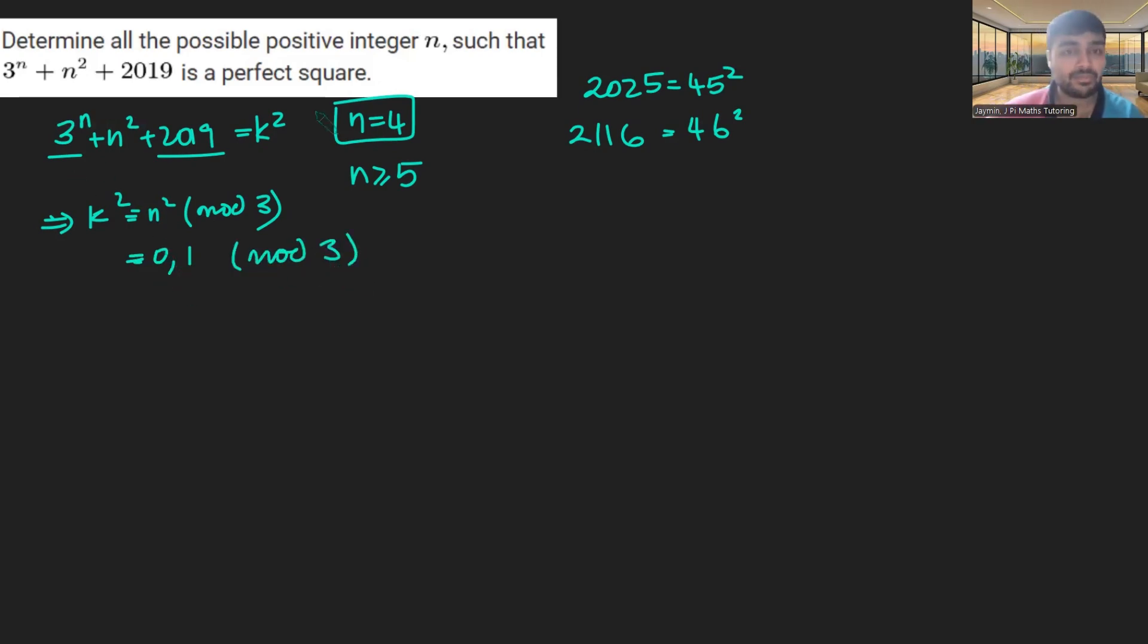So these two numbers are multiples of 3. So if I call this k squared, because we want it to be a square number, this tells me that k squared must be congruent to n squared mod 3. And square numbers can either be 0 or 1 mod 3. So k squared is going to be 0 or 1 mod 3.